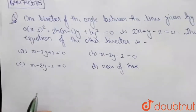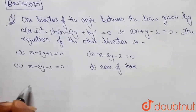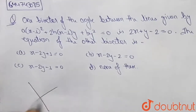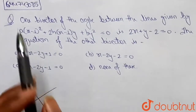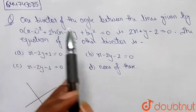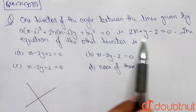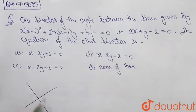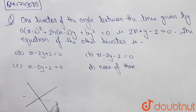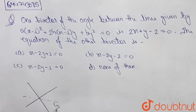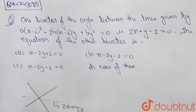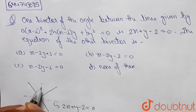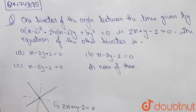In this question we have two lines, or we can say a pair of lines, and one of the bisectors of this line is given to us as 2x + y - 2 = 0. We have to find out the other bisector.